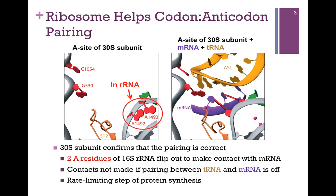How do we ensure that that base pairing is correct? What we're looking at now is a kind of proofreading mechanism that the ribosome has. On the far left, we have an illustration representing a ribbon diagram of a crystal structure that was determined of the A site of the 30S subunit. Notice in the rRNA, which is in gray, there are two adjacent A residues, and these play an important role in this proofreading process. On the far right, we have a representation of the mRNA in purple and an analog of the tRNA in gold. So our incoming tRNA will base pair with the mRNA, and those two A residues in the rRNA of the ribosome will play a role in checking that interaction.